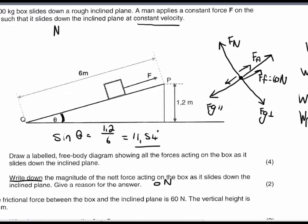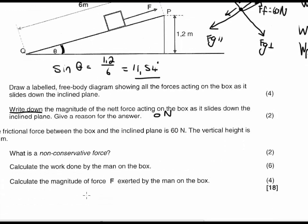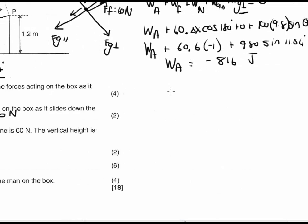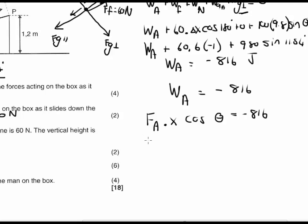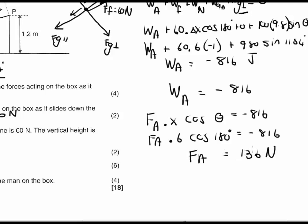The next part asks: calculate the magnitude of force F exerted by the man on the box. Since the work done by the man equals −816 J, and W = FA × Δx × cos θ, we substitute: FA × 6 × cos 180° = −816. FA is our unknown, Δx is 6, and cos 180° is used because FA is 180° from the displacement. Solving gives FA = 136 N, directed up the slope. Remember to make sure of your angles and substitute the correct values into your formula.